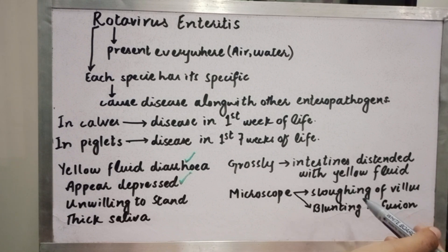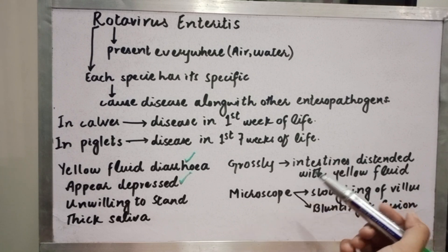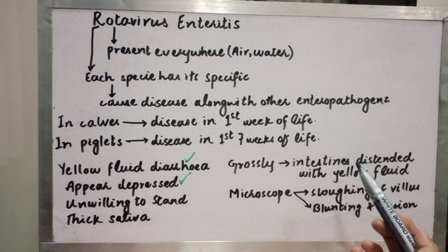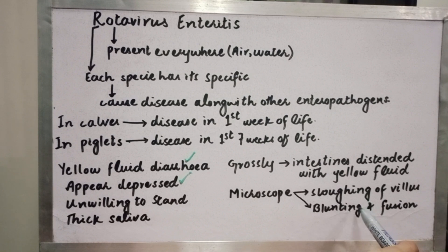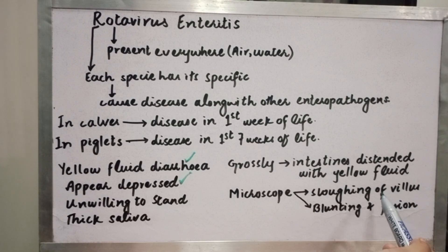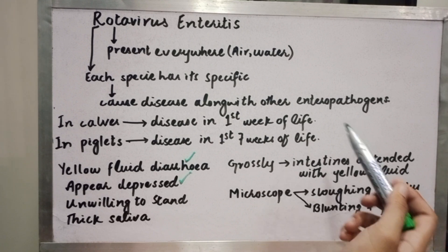Under the microscope we can see the villi. The villi increase the surface area for absorption of food. In rotavirus, the villi undergo sloughing, blunting, and fusion. If not functional, the villi will be less functional, then sloughed, blunted, and fused, which is characteristic in case of rotavirus.